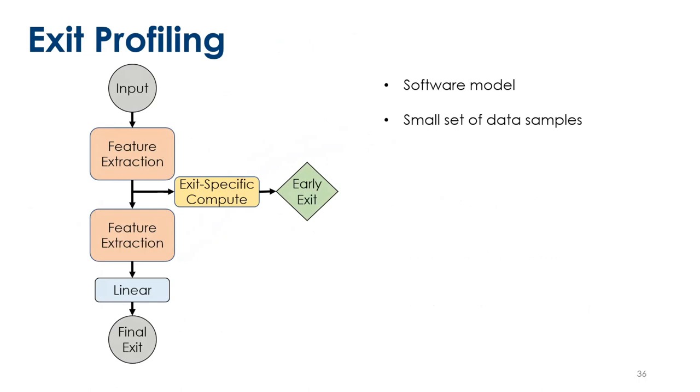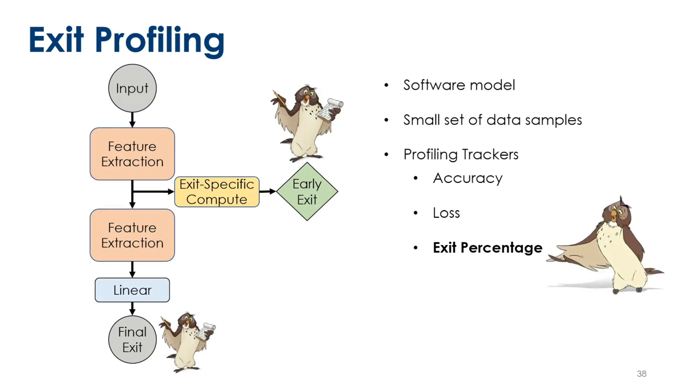So how do we get those probabilities in the first place? Well, first we move back to the software realm. We're back in PyTorch land or ONNX land. As part of the early-exit CNN parsing process, we require a subset of test data to be provided to us. Using the provided software model of the network, we attach various trackers, that's those in place of those owls, which is a bit of an abstract representation. These trackers, we feed data through the model, and various trackers determine a number of things like accuracy at a given exit, loss at a given exit, and most importantly the exit percentage at a given exit.